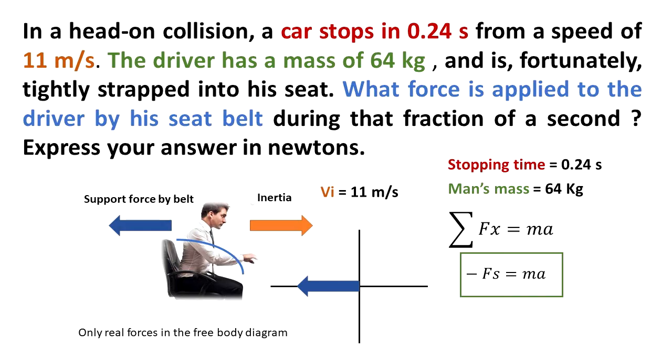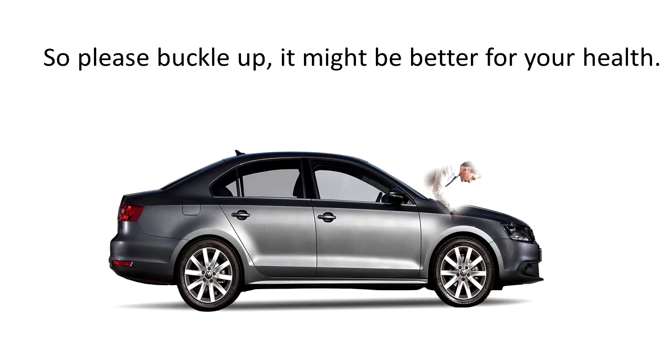That's why the seatbelt is very important because the seatbelt is going to attach the person to the seat. When the body of the person tries to keep moving because of inertia, the seatbelt will apply a support force to keep the person in place. Sometimes the acceleration is very high and the person is going to be hurt, but it's a lot better to be pulled on the chair than flying through the window.